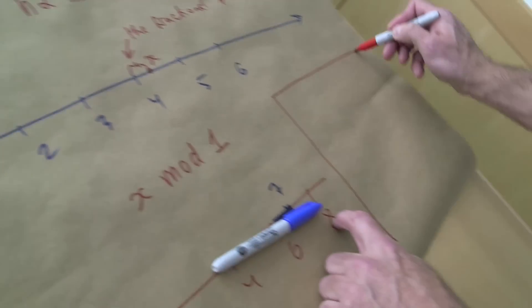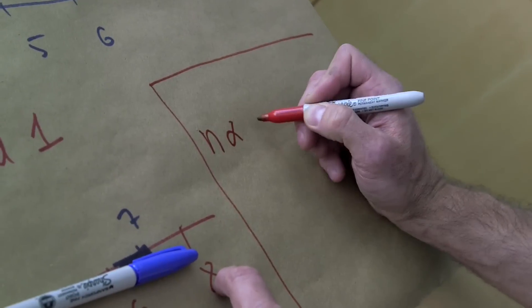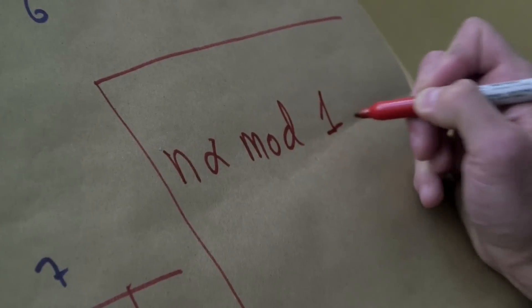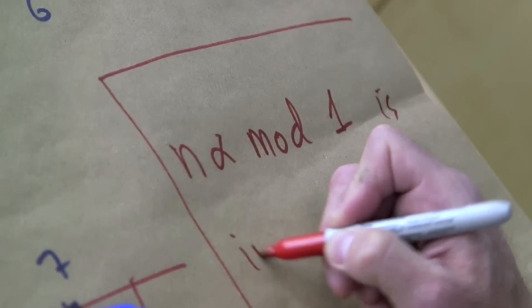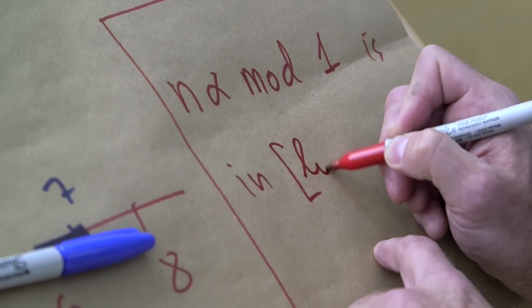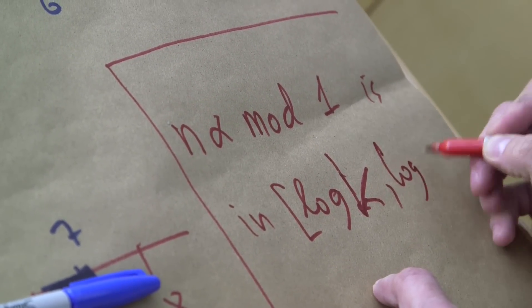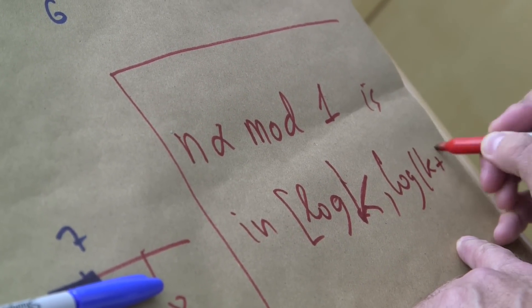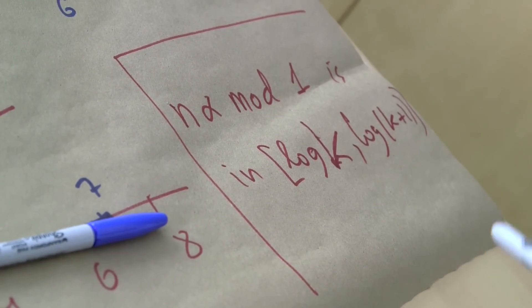So the upshot is that this n alpha mod 1 is in the interval from log k to log k plus 1. So this is not very pretty, maybe I should start over. Another piece of paper.